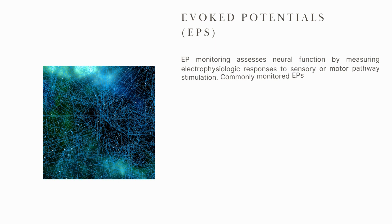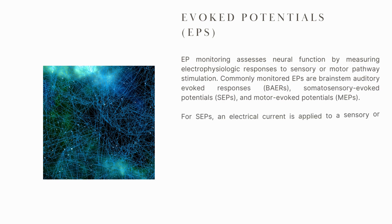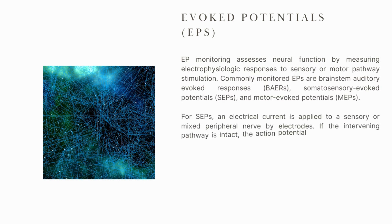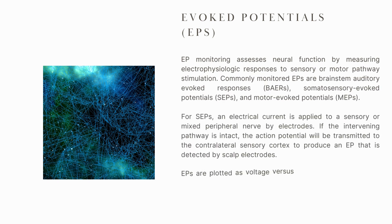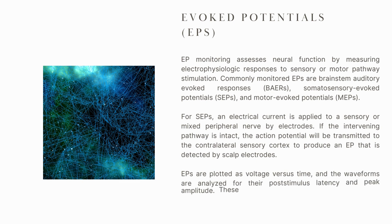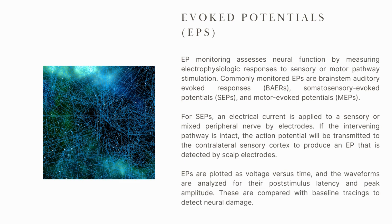Evoked Potentials — EP monitoring assesses neural function by measuring electrophysiologic responses to sensory or motor pathway stimulation. Commonly monitored EPs are brainstem auditory evoked responses, BAERs, somatosensory evoked potentials, SEPs, and motor evoked potentials, MEPs.